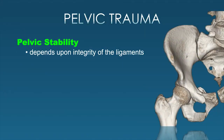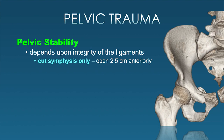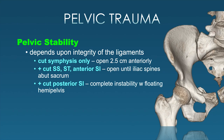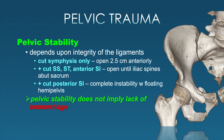Pelvic stability really depends upon integrity of the ligaments we've just reviewed. If you cut open the pubic symphysis only, you can spread open about two and a half centimeters anteriorly—that's still a stable situation. But if in addition we start to cut through the pelvic floor ligaments, sacrospinous and sacrotuberous ligaments, as well as the anterior SI joints, we will open one hemipelvis further. Adding posterior SI joint ligament disruption gives us complete instability of one hemipelvis, essentially free-floating. Pelvic stability does not imply a lack of hemorrhage—the two are more or less independent, and pelvic ring fractures should always be assessed for hemorrhage.